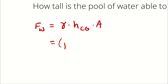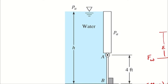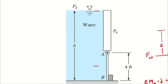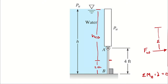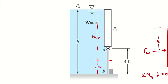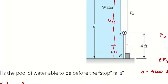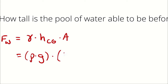I will substitute in density times gravity in place of specific weight, since we have more convenient access to density values for water. For hcg, I'm talking about the distance from the surface to the center of gravity of the gate, which is the exact middle of the gate. I don't know hcg because h is my unknown, so I want to write hcg in terms of h. The relationship is h equals hcg plus half the height of the door, which is 2 feet. Therefore hcg equals h minus 2 feet.